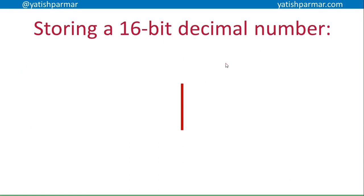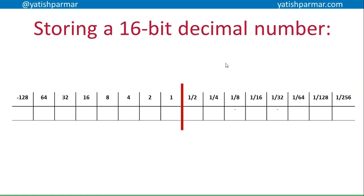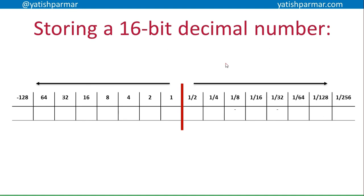So if I want to store a 16-bit decimal number, I'm going to cut my binary word in half. The left hand side is in increasing magnitude and the right hand side is in decreasing magnitude in terms of the fraction. So if I want to store 5.75, on the left hand side it's going to be 1, 0, 1 and the rest are all zeros.